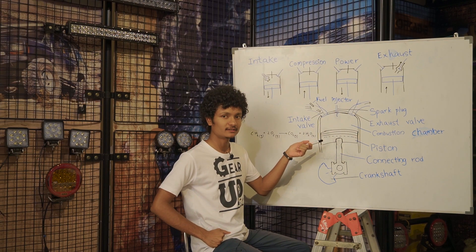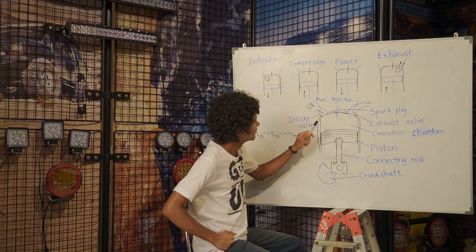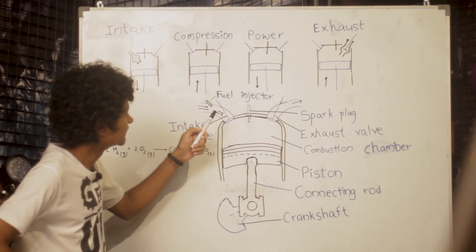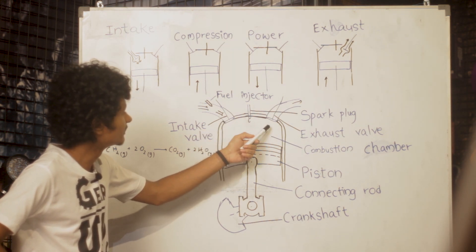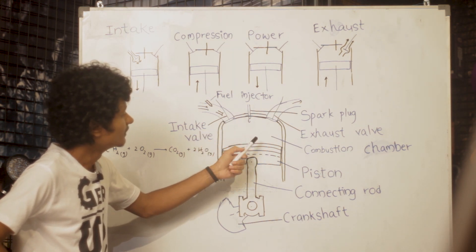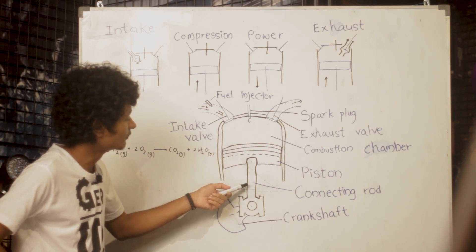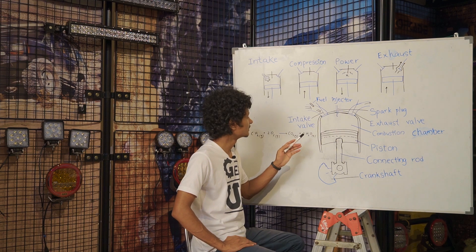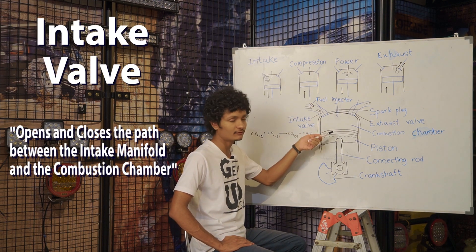In this video, we can talk about the 4-stroke petrol engine. We can talk about the parts: fuel injector, spark plug, intake exhaust valve, combustion chamber, piston connecting rod, and crankshaft. We can also talk about the intake valve, intake manifold, and combustion chamber.